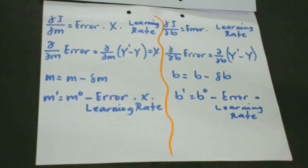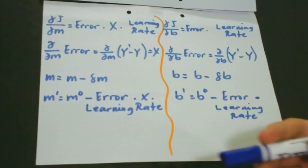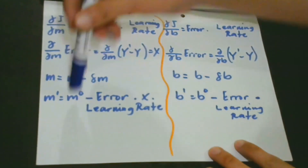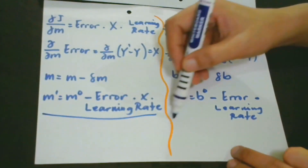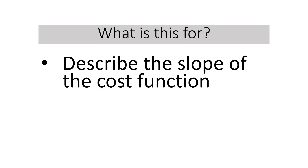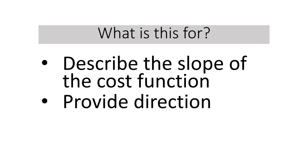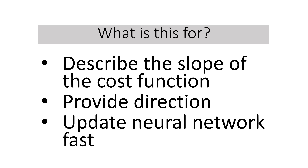To solve for the gradient, we iterate the process for all data points — using the M formula for each point of M, and the B formula for each point of B. The new gradient describes the slope of the cost function with respect to our current position and tells us where to move to update our parameters. Gradient descent, or gradient-based optimization, is the fastest way to update the weights of our neural networks.